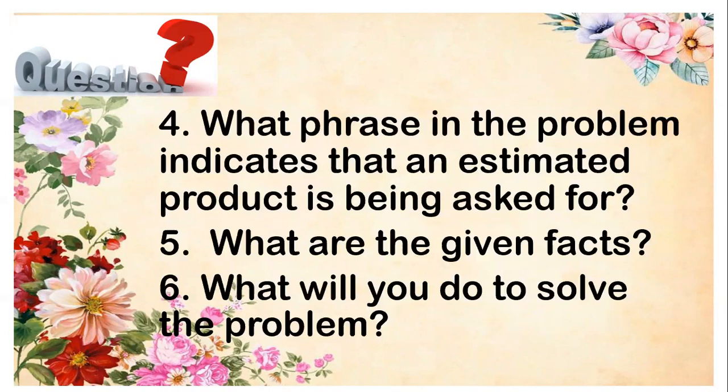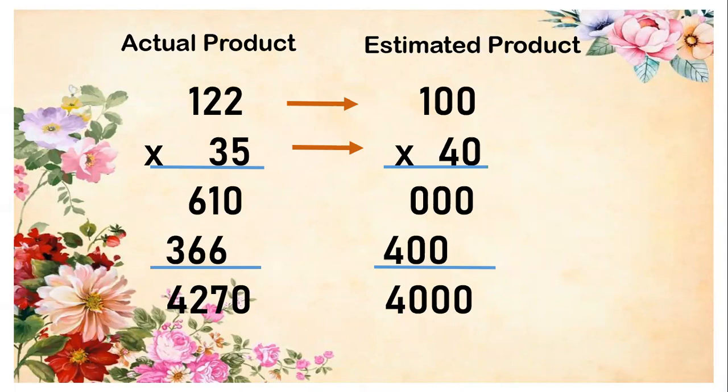Now let us solve it by using the data given. I am going to show you the actual product and the estimated product. Let us discuss first the actual product. The given here is 122 and 35. 122 is our multiplicand and 35 is our multiplier. Now the first step is multiply 122 by 5. We will regroup the answer when the product is 10 or greater.